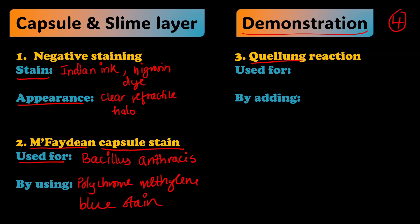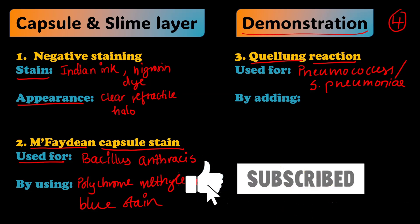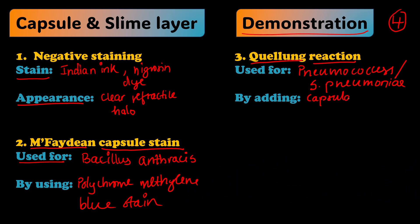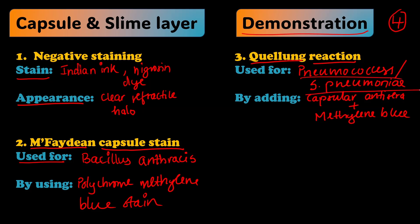The next method is the Quellung reaction, which is used for the demonstration of the capsule of Pneumococcus — also referred to as Streptococcus pneumoniae. These are not two separate species; they are alternate names for the same organism. The Quellung reaction is performed by adding capsular anti-sera along with methylene blue stain. So to summarize: Quellung reaction is used for Pneumococcus, using capsular anti-sera with methylene blue.